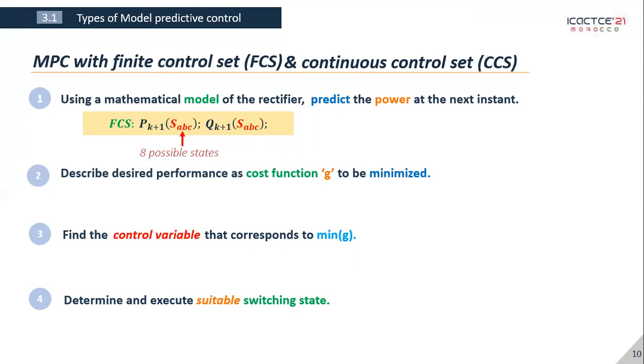Now for the other type of model predictive control, we use the converter voltage as control variable. It is called the continuous control set because the converter voltage is a continuous time variable.